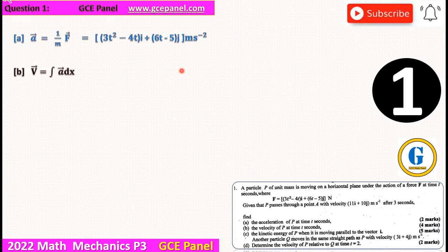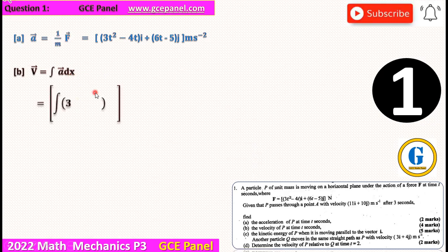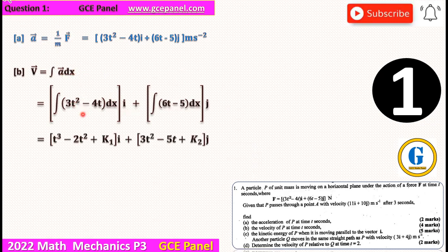Find the velocity of P at time T seconds. Now that we have the acceleration, we can obtain the velocity by integrating the acceleration. So the integral of the I component and the J components respectively will give us the following. We will have K1 for the I component and K2 for the J component when we integrate.